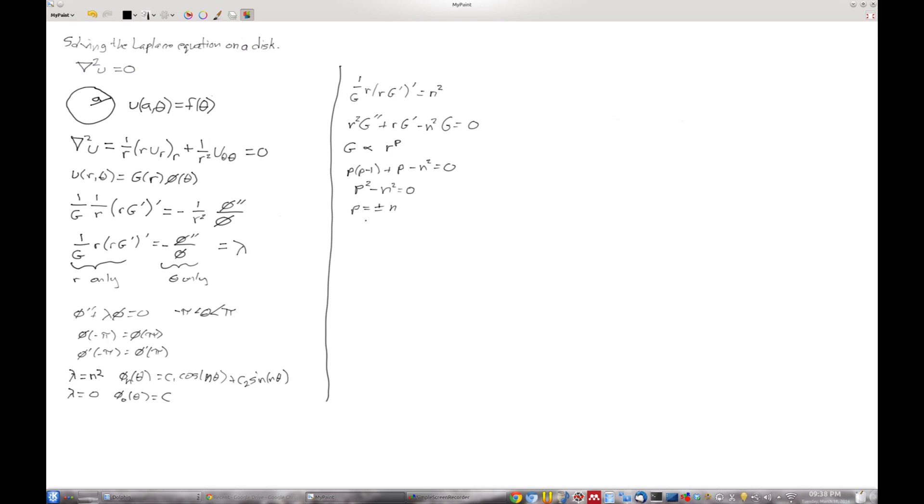Now, what about when lambda equals 0? So I'll leave it as an exercise to you to verify that when lambda is equal to 0, you will get a constant. But you will also get a logarithmic term. So if n equals 0, then g of r is a constant plus a logarithmic term. If you don't understand why that's true, then ask. But that is a great thing to dust off the notes and figure out.